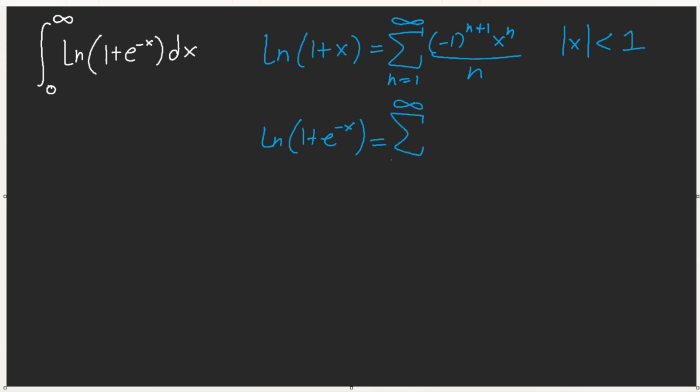ln(1 + e^(-x)) — you're literally just substituting x = e^(-x), that's all you're doing. So what we have is e^(-xn). And of course we can still integrate this, because e^(-xn) is still integrable. This works because e^(-x), as long as — plug in 0, it's still in between -1 and 1. Plug in 0, it's 1. Plug in infinity, we get 0. So it's kind of like letting u = e^(-x). That's pretty much what it is.